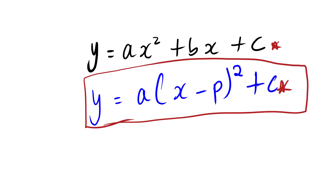We all know that a quadratic equation represents or describes a parabola function. A parabolic function has a maximum or minimum, and it also has a turning point. Looking at the bracket form of the equation, the values C and P represent the turning point.